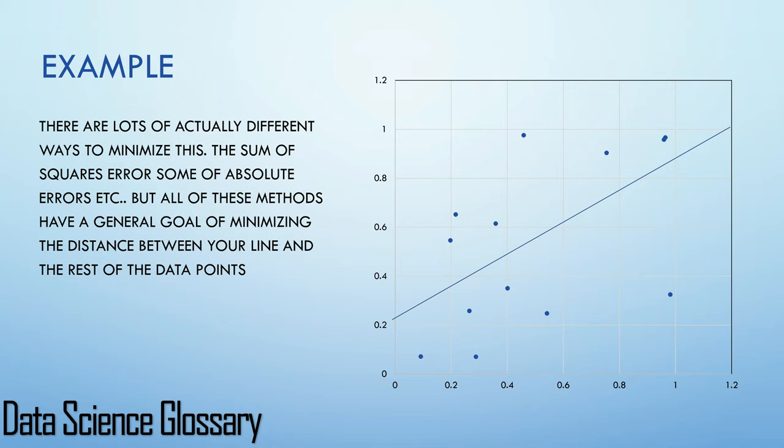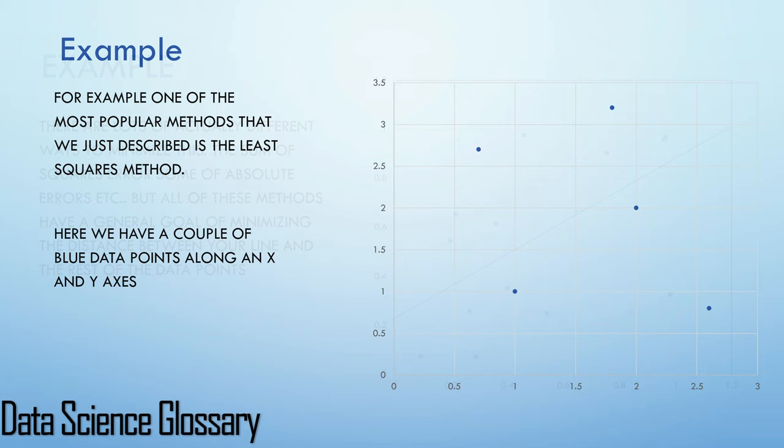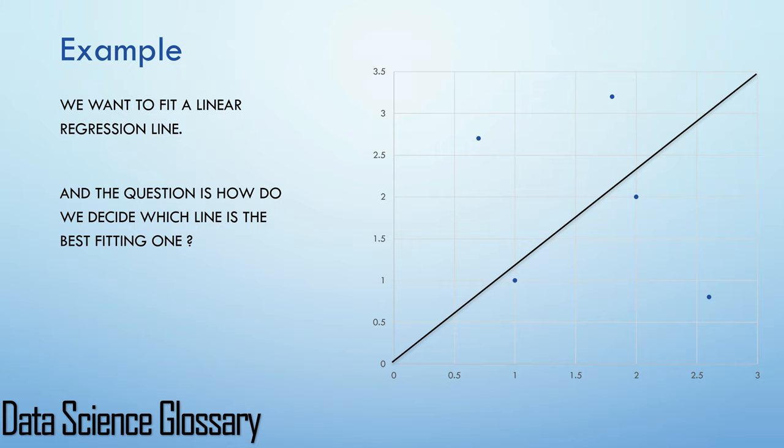For example, one of the most popular methods that we just described is the least squares method. Here we have a couple of data points along an x and y axis and we want to fit a linear regression line. The question is how do we decide which line is the best fitting one?